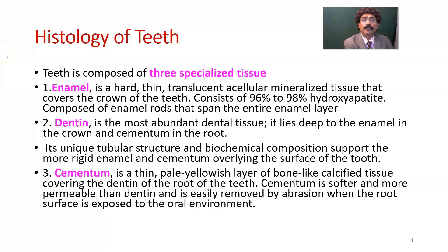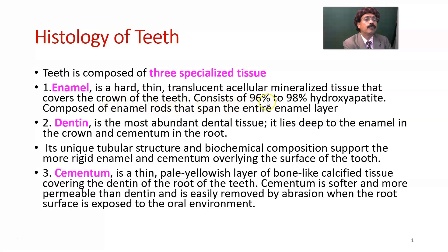Hello, my name is Dr. Divan S. Raja. Today I will discuss the histology of teeth. Teeth are composed of three specialized tissues: enamel, dentin, and cementum. Enamel is the hardest tissue in our body. Dentin is the second hardest tissue in our body, and cementum is as hard as bone. Enamel is a hard, thin, translucent, acellular, mineralized tissue that covers the crown of the teeth, consisting of 96% to 98% hydroxyapatite.